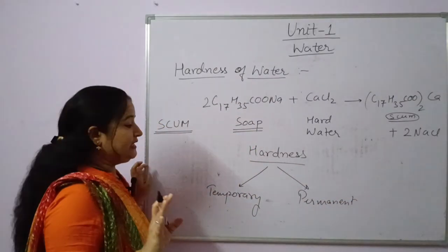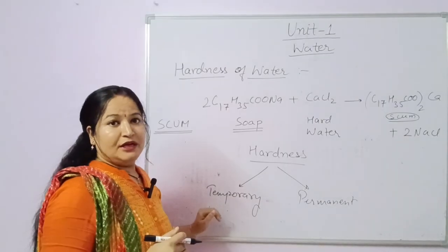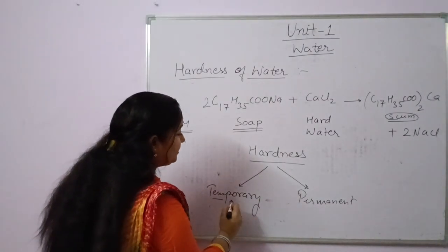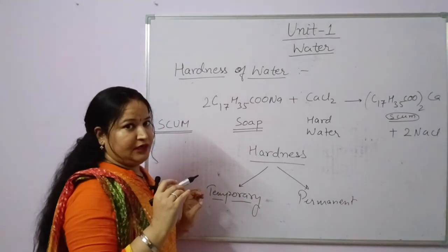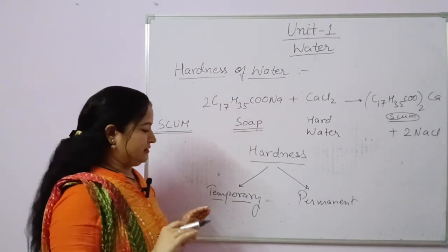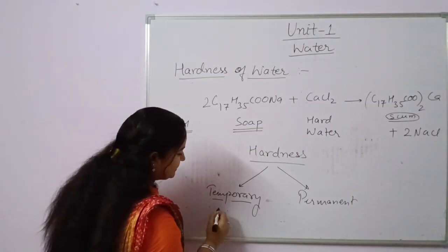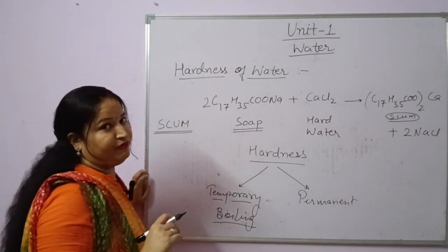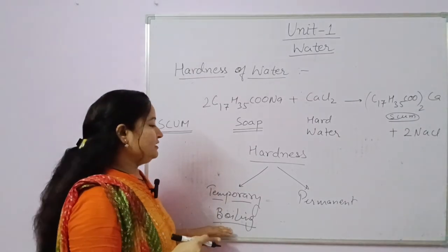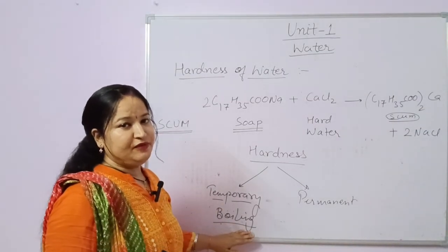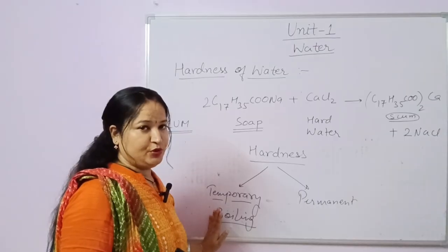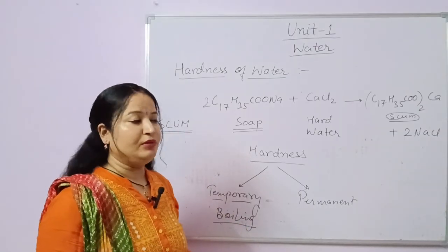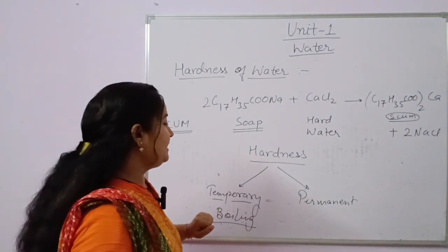In temporary hardness — temporary means it can be removed by a simple method, and that simple method is boiling. By boiling, we can easily remove temporary hardness. That is why this hardness is known as temporary hardness, because it is easily removed by simple boiling.